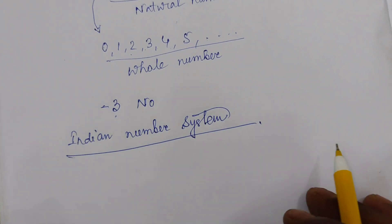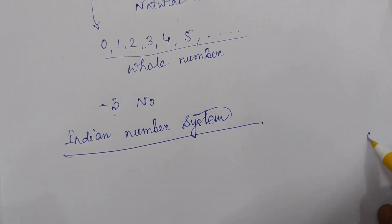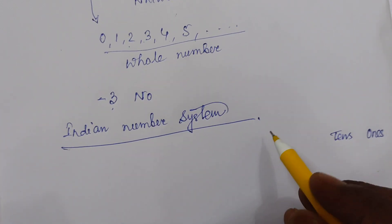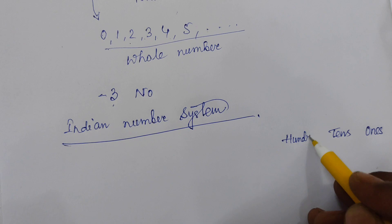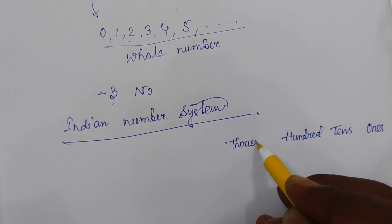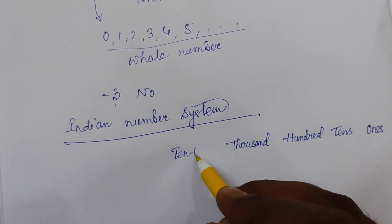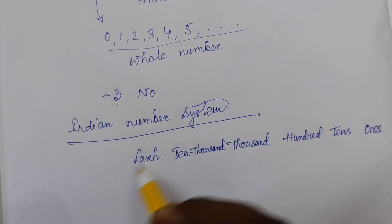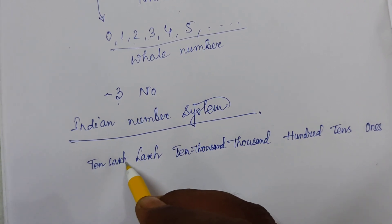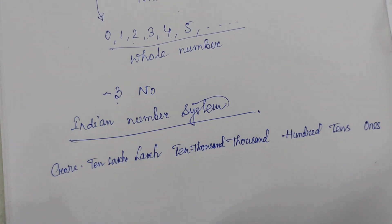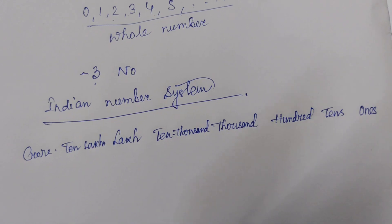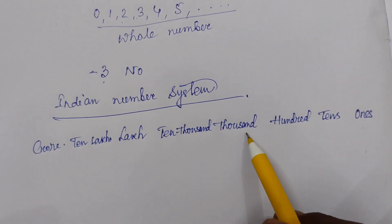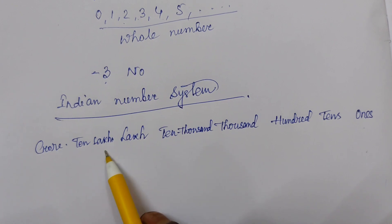Everyone write the chart. At the rightmost is ones, then tens, then hundreds, then thousands, then ten thousands, then lakhs, then ten lakhs, then crore.